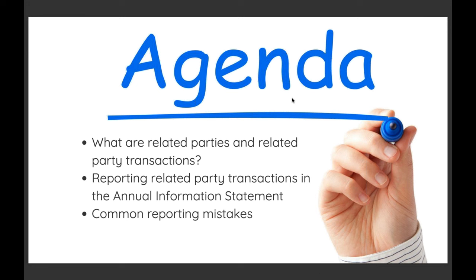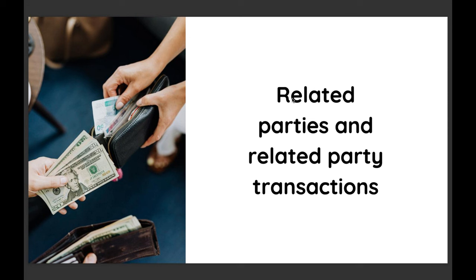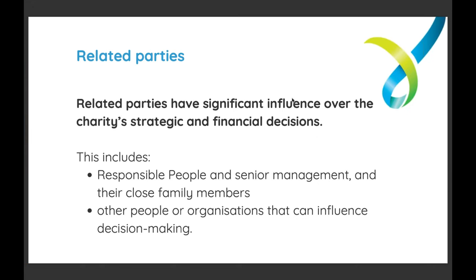Now that we've covered those admin points, let's move on to the agenda for today. Our main focus is on related party transactions. We'll start by explaining who is a related party and what a related party transaction is. We'll also look at how the requirement to disclose related party transactions came about, then discuss the specific requirements for the 2023 Annual Information Statement, or AIS. We'll also touch on other changes to this year's AIS and some common reporting mistakes.